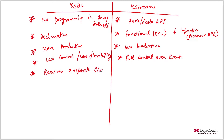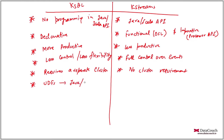KStreams has no separate cluster requirement. Apart from that, KSQL has support for UDFs — User Defined Functions — so you can write user defined functions in Java or Scala to extend its functionality. In KStreams you are already working at a lower level, so you can easily extend it using its API.